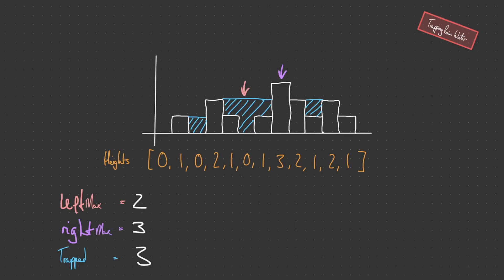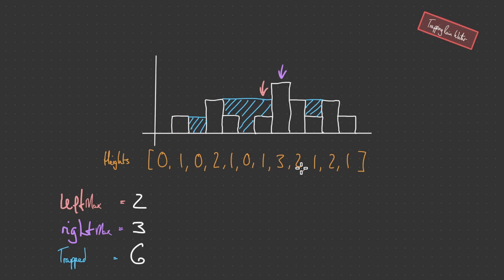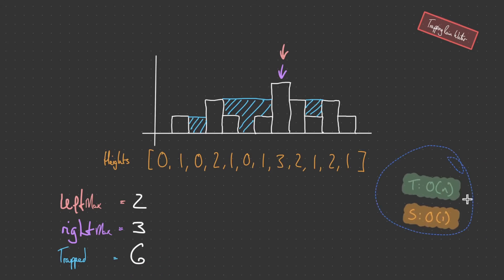We compare left max with the current value — that gives us one unit stored, updating trap to three. Incrementing the left pointer: left max is two and the current height is zero, giving two units of water — trap goes up to five. Incrementing again: one compared against left max of two gives one more unit, bringing us to six. We move the left pointer along. Now left is no longer less than right, so we return our answer of six. This is the optimal solution with linear time and constant O(1) space.